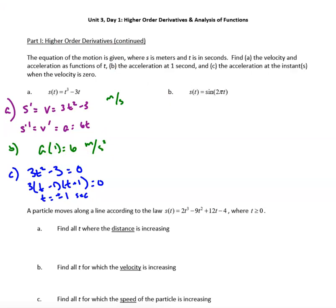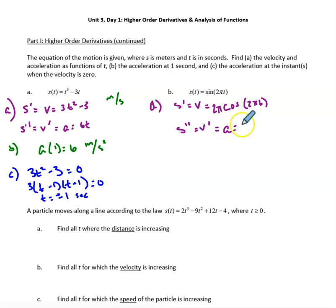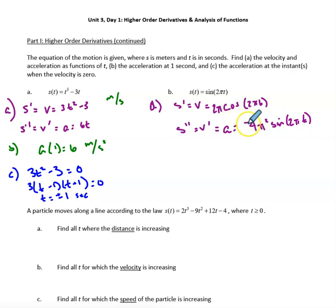Now let's do the same thing with part B of the second problem. Take the first derivative of position to get velocity — we have a chain rule situation. Sine differentiates to cosine of 2πt, multiplied by the derivative of the inside function, which is 2π. Then for s double prime — the first derivative of velocity, which is acceleration — cosine goes to negative sine of 2πt, and bringing out the inside derivative again: 2π times 2π gives negative 4π squared. The negative came from differentiating cosine to negative sine.